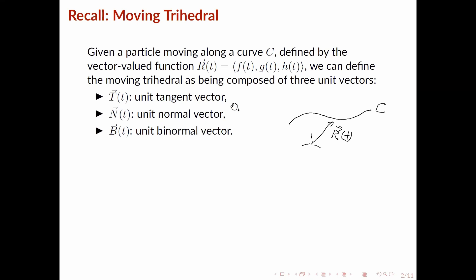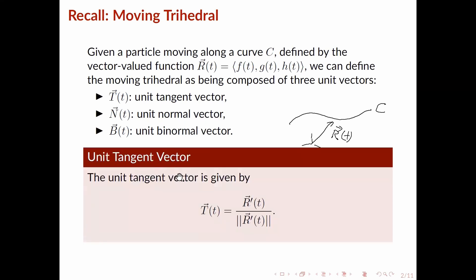First we have the unit tangent vector, and this is defined by the derivative of r divided by the magnitude of the derivative of r. If we were to represent that in our drawing, we can draw it like this — this is the unit tangent vector.